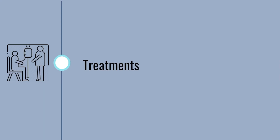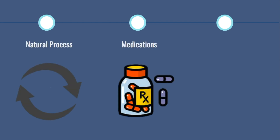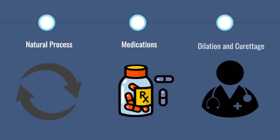Treatment options vary per individual as every case is different. Some may expel the embryonic tissue naturally, while others can take medications prescribed by their doctor. In other cases, a dilation and curettage, also known as D&C, will be performed in which the cervix is dilated 6 to 9 millimeters and the embryonic tissue will be removed.